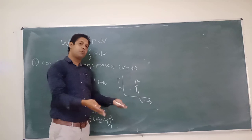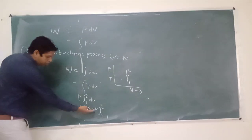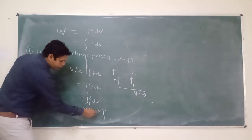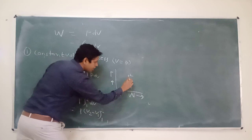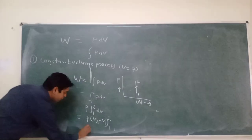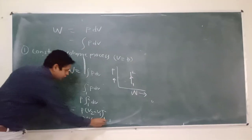Work will be always zero. If you put the limit 1 to 2, then V2 equal to V, V1 equal to V. That is what happened, V minus V, that is what happened, zero.